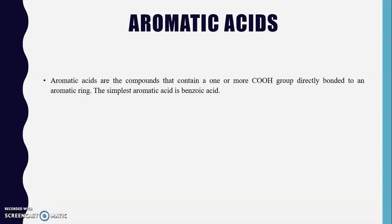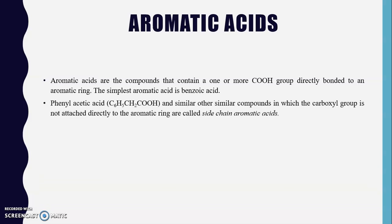Aromatic acids are compounds that contain one or more carboxylic acid groups directly bonded to an aromatic ring. The simplest example is benzoic acid, where one carboxylic acid group is attached to the benzene ring. Compounds like phenylacetic acid, in which the carboxyl group is not directly attached to the aromatic ring, are called side-chain aromatic acids.